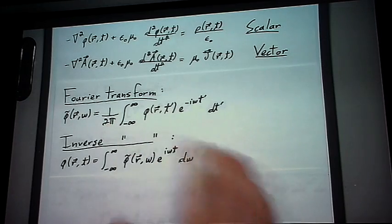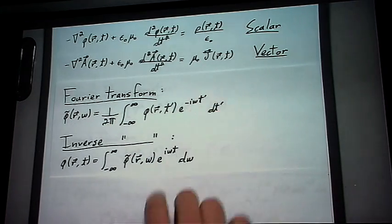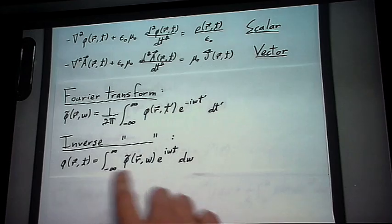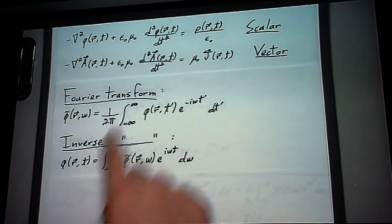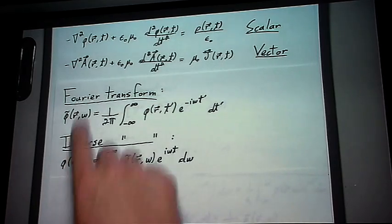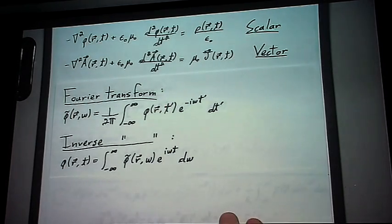The factor of 2 pi is just by convention. So what we're going to do is we're actually going to be using the inverse Fourier transform to replace the function phi here into our differential equation.